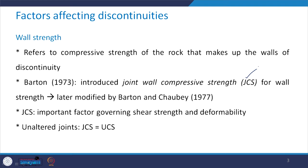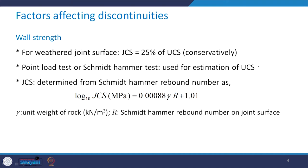In case of unaltered joints, JCS becomes approximately equal to the unconfined compressive strength of the intact rock. For weathered joint surfaces, roughly JCS can be taken as 25% of the UCS. This is just an estimate which has been found to work nicely for most cases. We use the point load test or Schmidt hammer test for the estimation of UCS, as seen in some of the earlier classes.